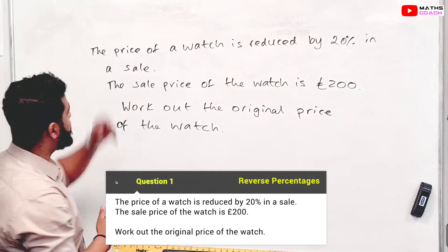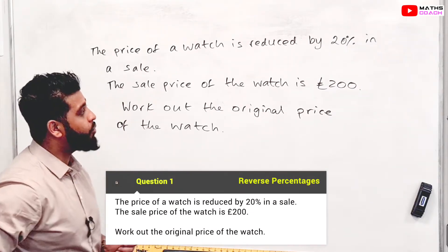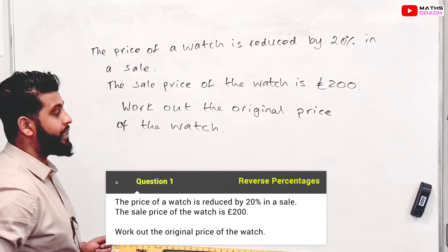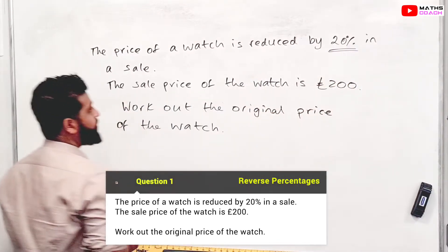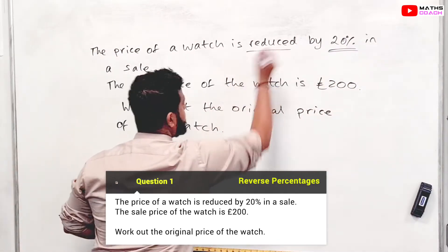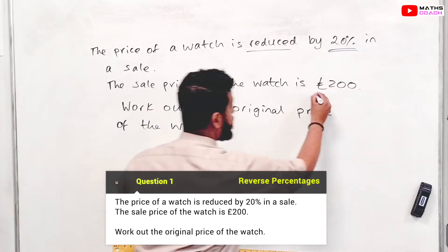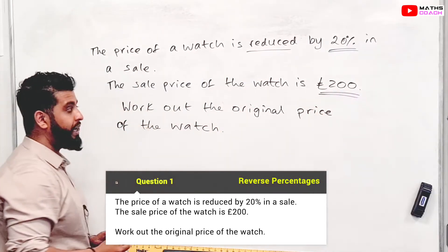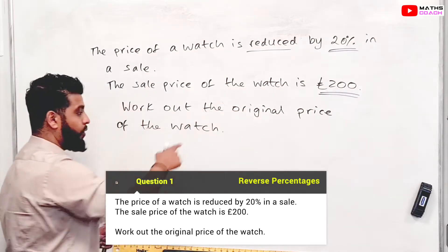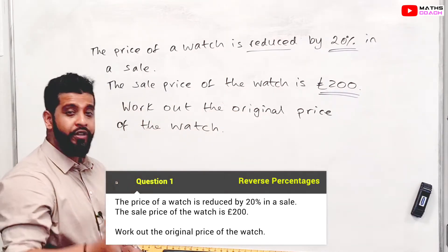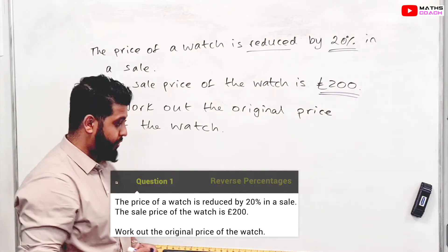The first question we're going to look at is: the price of a watch is reduced by 20% in a sale. Let's highlight that 20% — it's reduced. The sale price of the watch is £200, so that's how much you paid for it. Work out the original price of the watch.